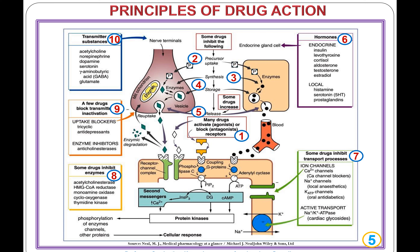Principle 6: some drugs replace substances, known as hormones. For example, endocrine hormones such as insulin, levothyroxine, cortisol, aldosterone, testosterone, and estradiol. Also local chemical mediators, for example histamine, serotonin, and prostaglandins.